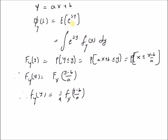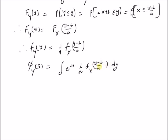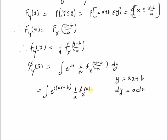Now by inserting this result into the definition of the MGF of the new random variable y, we have phi_y of s equal to the integral of e to the power s times y, times 1/a times f_x of (y minus b)/a, dy. Using the transformation y equals ax plus b, we rewrite this integral: dy equals a times dx, giving us the integral of e to the power s(ax plus b), divided by a, times f_x of x, times a dx.